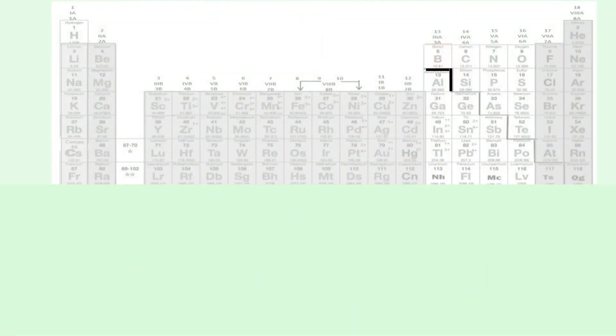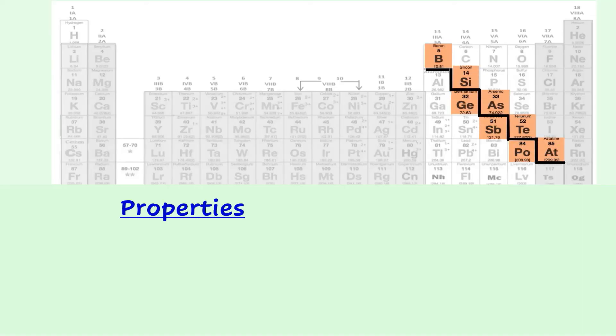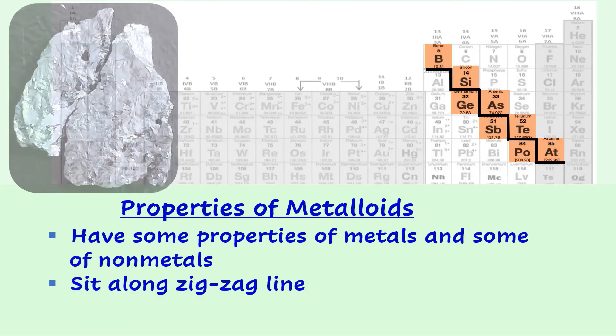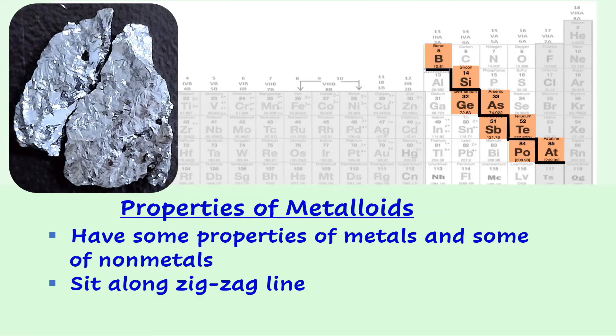Elements along the zigzag line tend to have some properties of both metals and non-metals. For example, silicon pictured here has luster or shine like a metal, but its cracks indicate that it's brittle like a non-metal. Since these elements don't fit neatly into the metal or non-metal category, a new category called metalloids was created. Many of the metalloids are semiconductors, meaning they can conduct electricity, but only slightly.